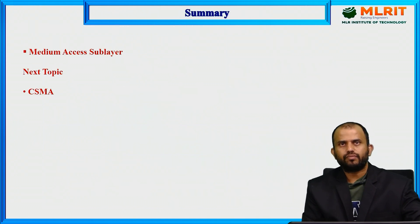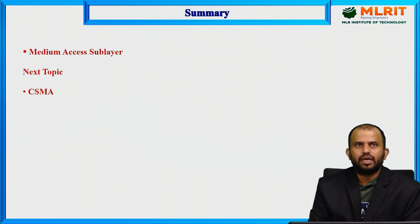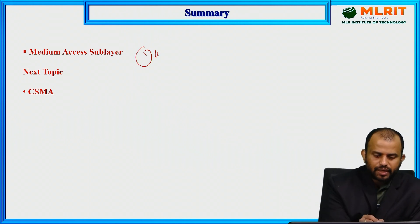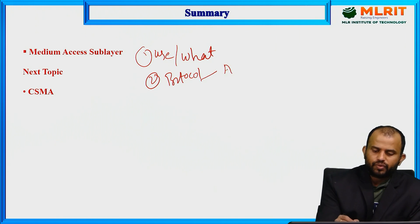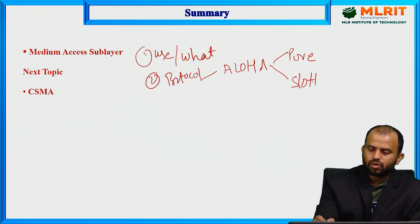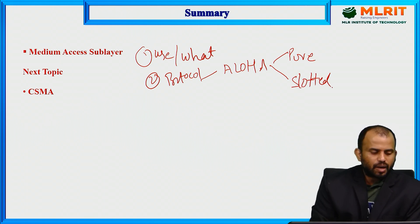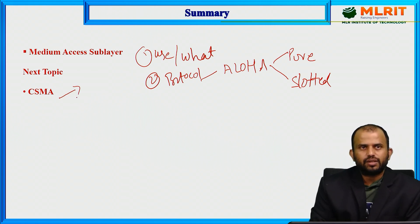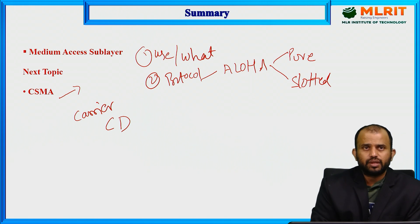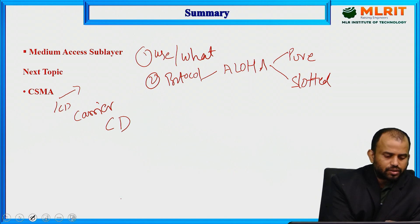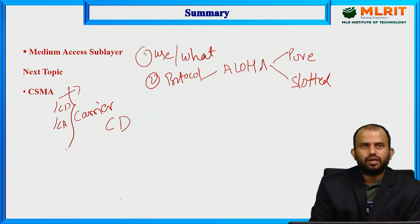To conclude this session: we discussed the MAC sublayer, its uses, and what kind of protocols we are using. We discussed two protocols under the ALOHA section — Pure ALOHA and Slotted ALOHA. In the upcoming session, we will discuss the CSMA mechanism — Carrier Sense Multiple Access — and how to detect errors, specifically CSMA with Collision Detection and Collision Avoidance. Thank you.